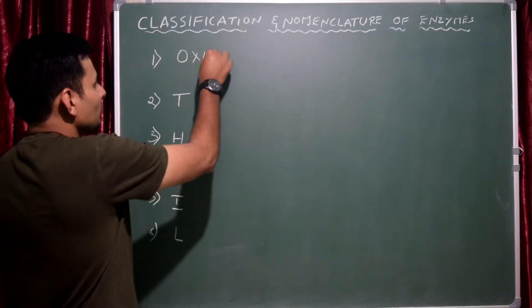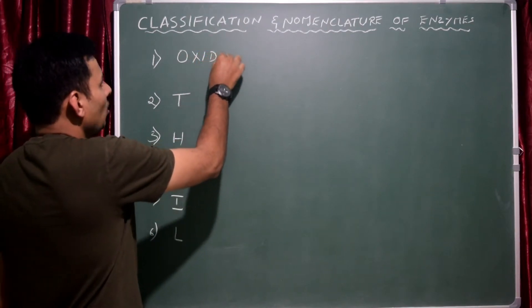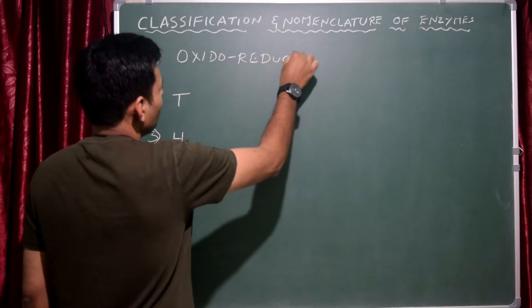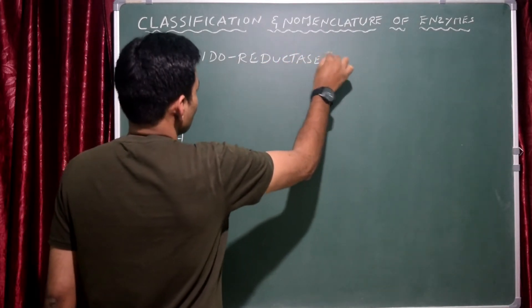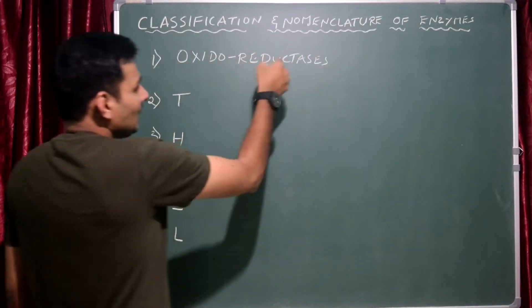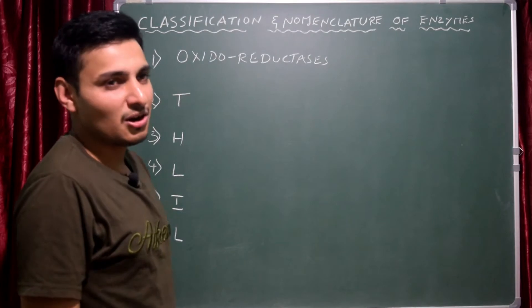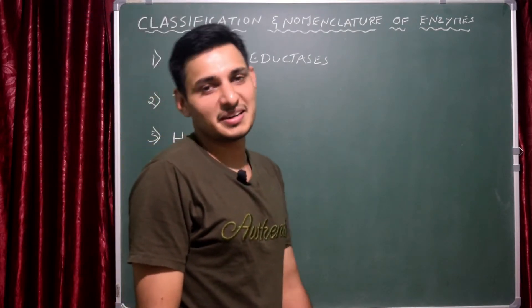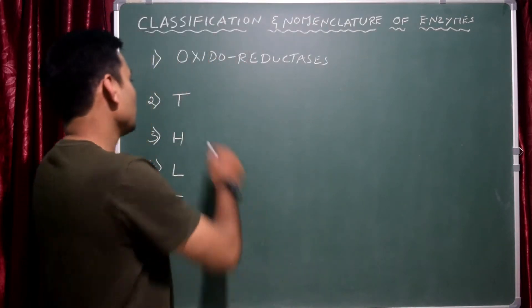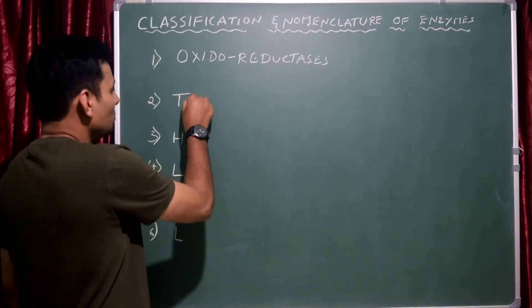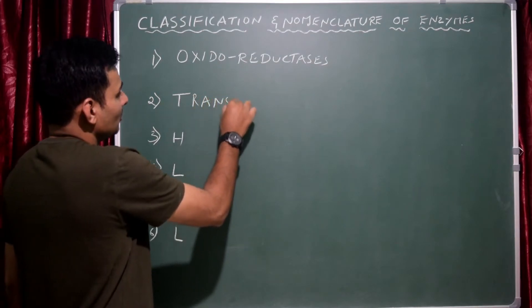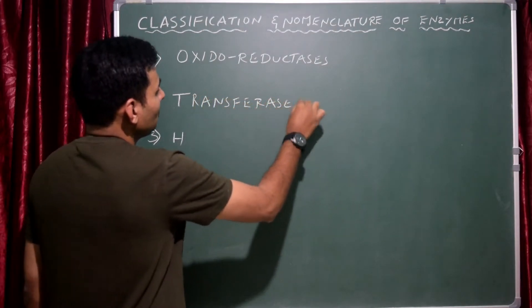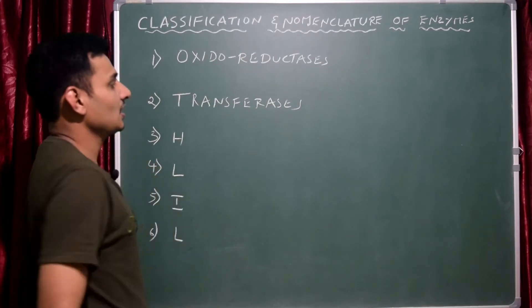The first class of enzymes is oxidoreductases. They bring oxidation and reduction in a chemical reaction — simple. Next, T — that is transferases. They bring the transfer of groups between the substrates.